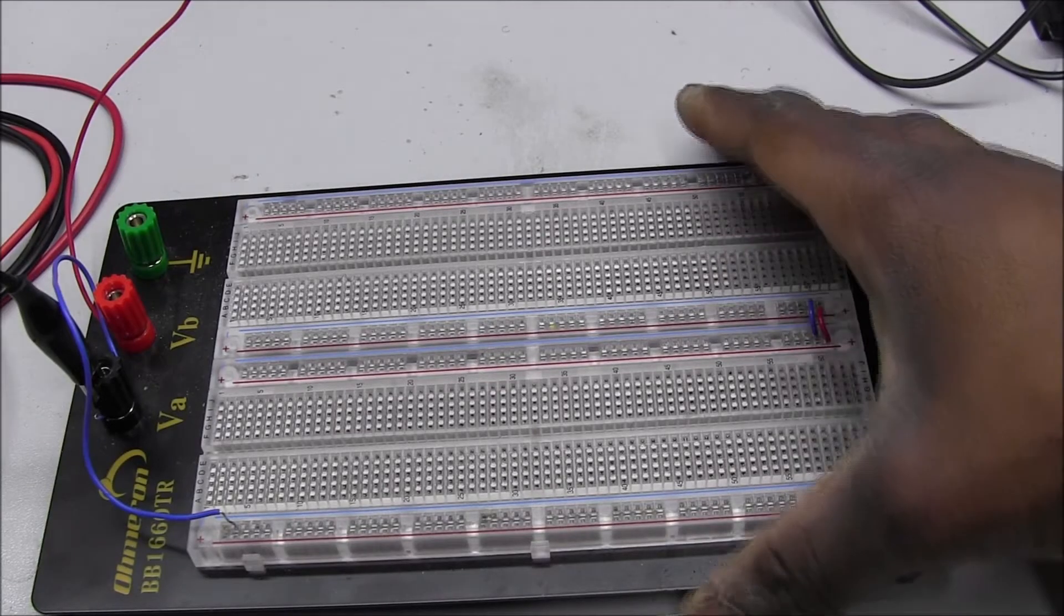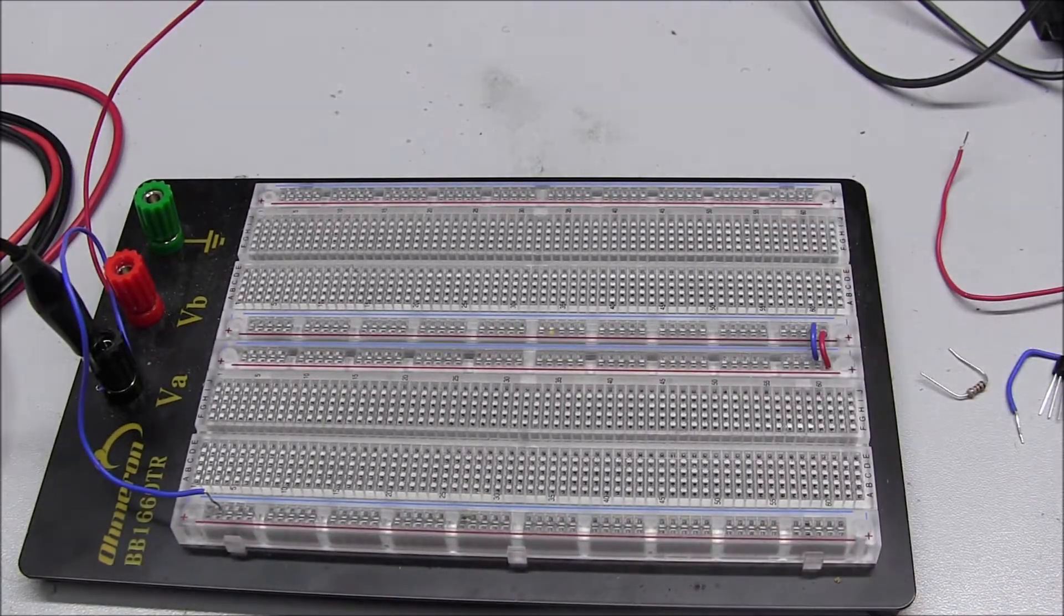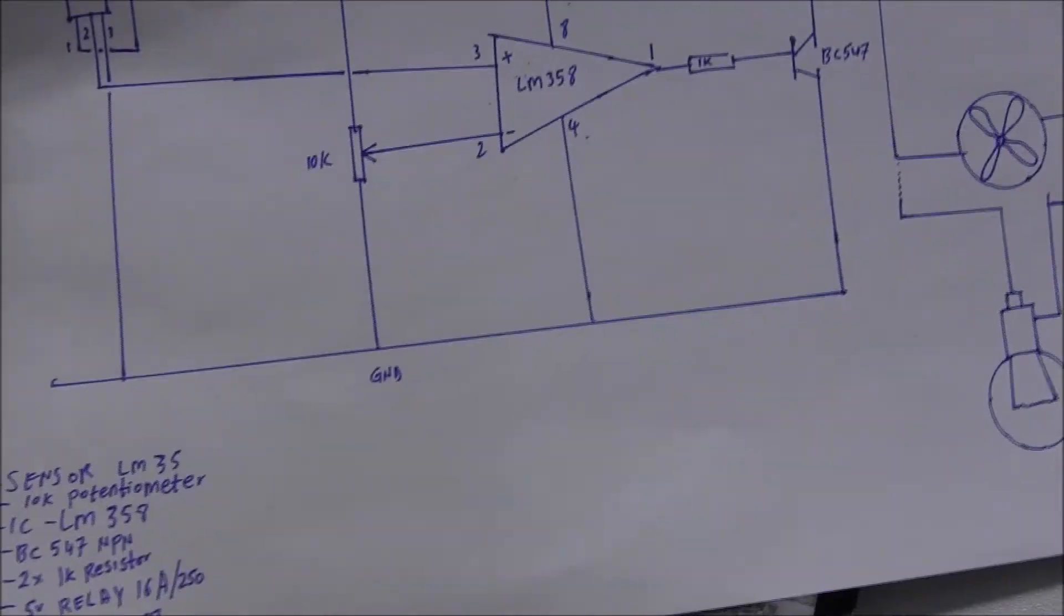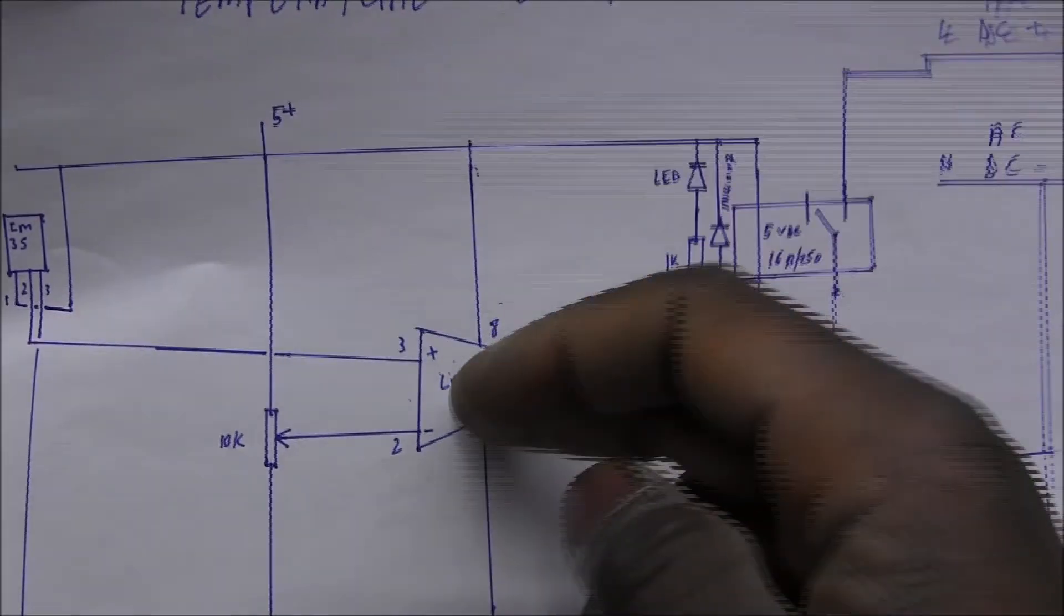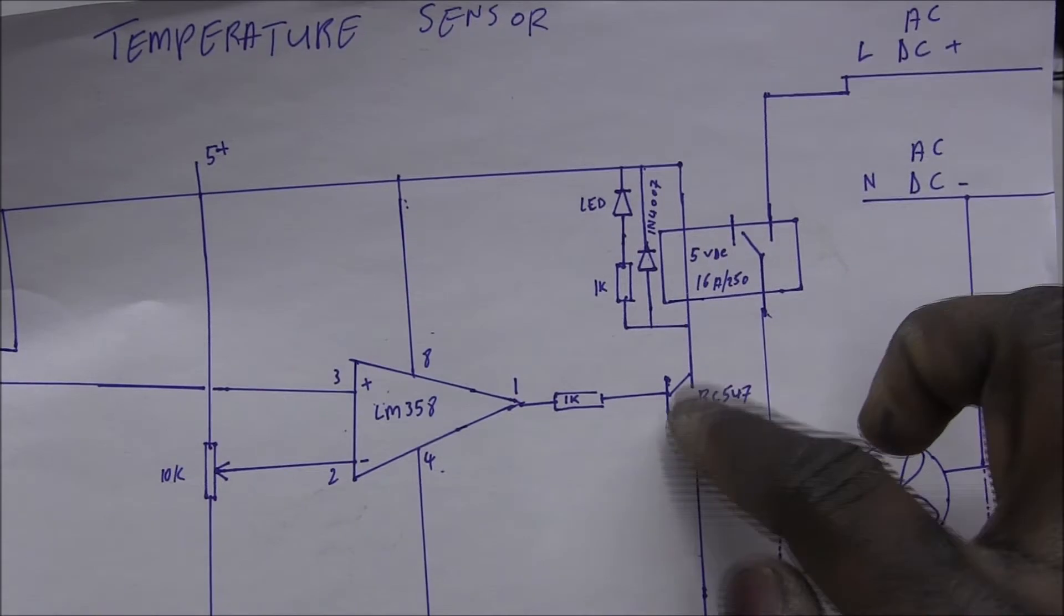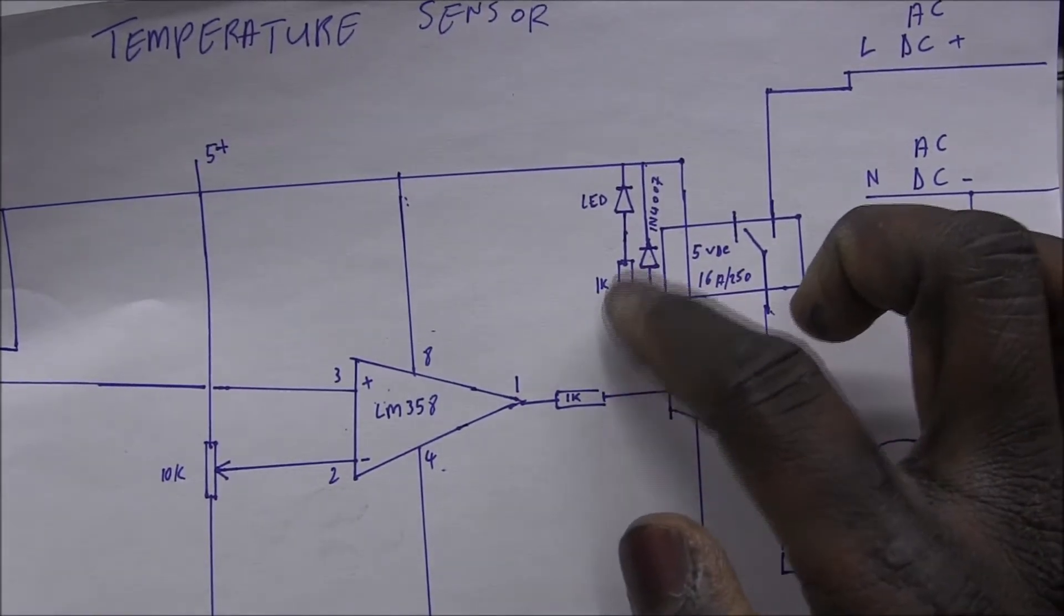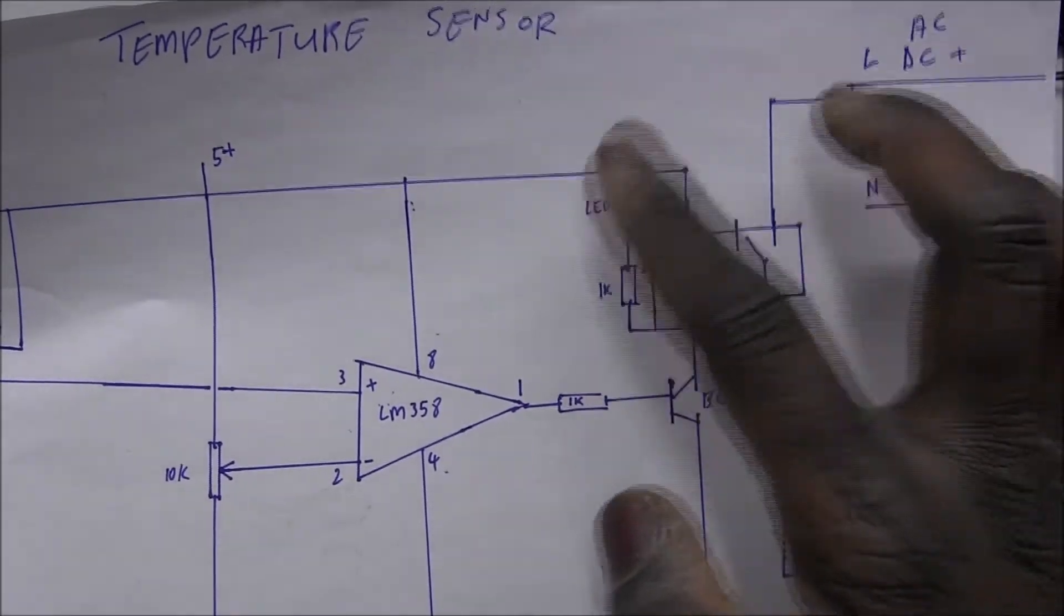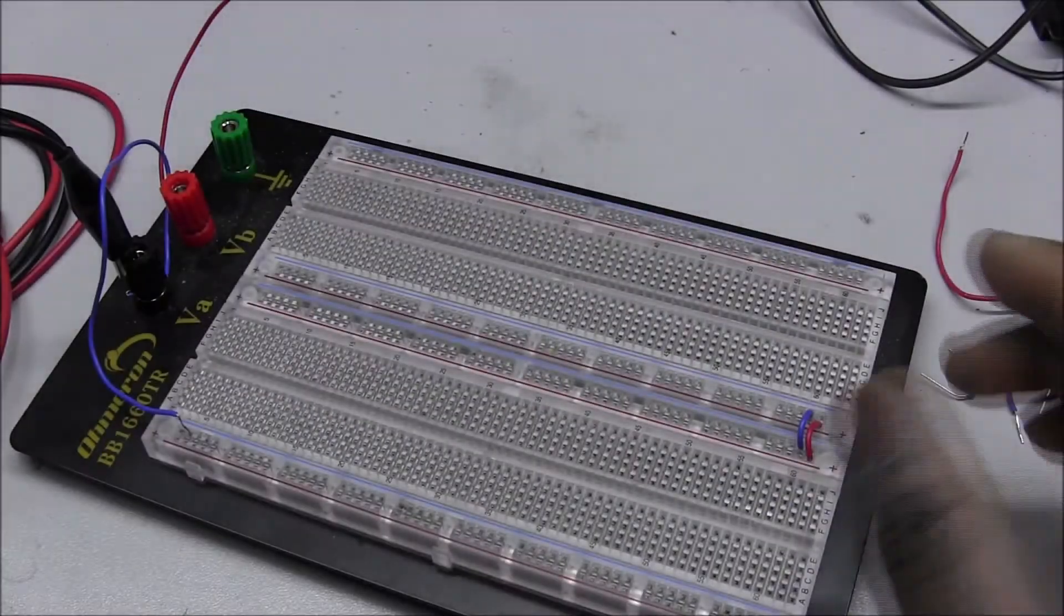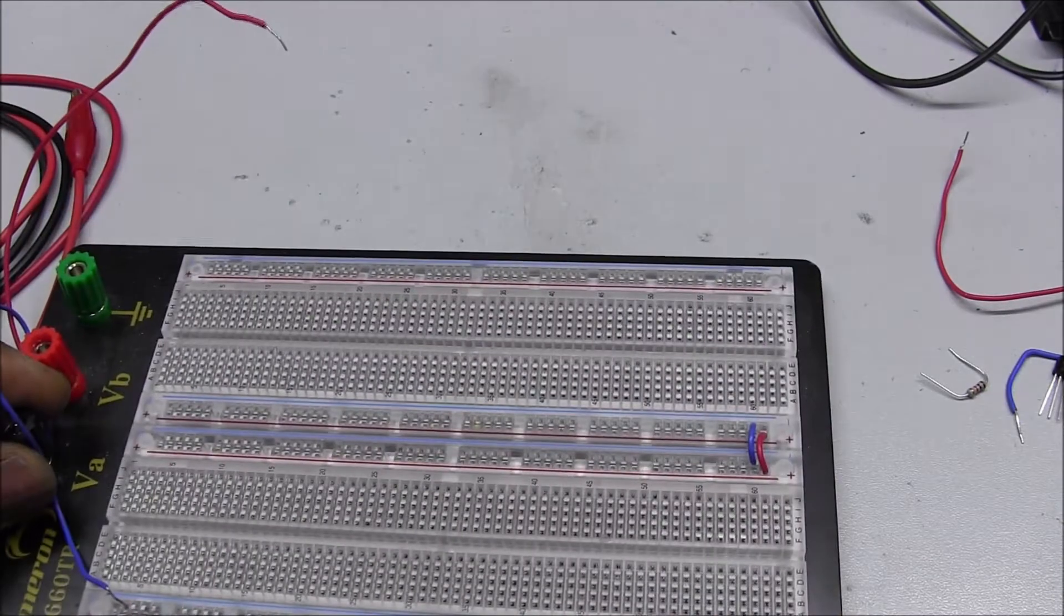So I'm gonna now connect everything on the breadboard according to this schematic here. Okay, the components over there: the sensor, the LM358 IC, the relay, transistor, a couple of resistors, LED and diode. Okay, so I'm gonna start hooking up the components.